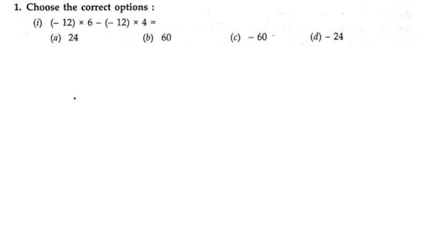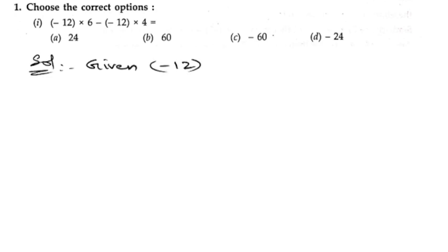Choose the correct option. First bit: minus 12 into 6, minus of minus 12 into 4. We need to solve and select the correct option. Let us write down the given expression: minus 12 into 6, minus of minus 12 into 4. We want to take out minus 12 as common factor.